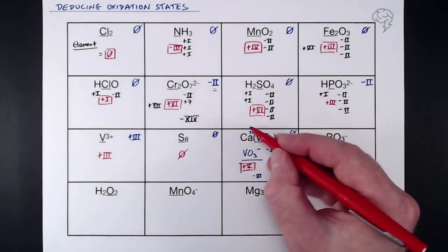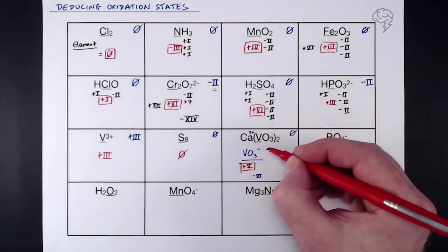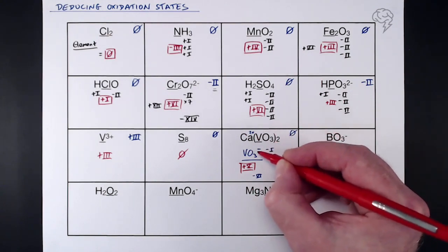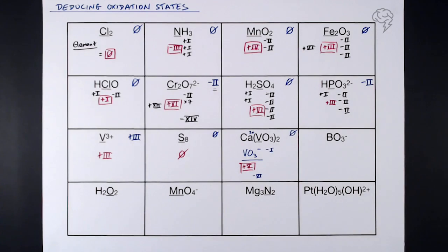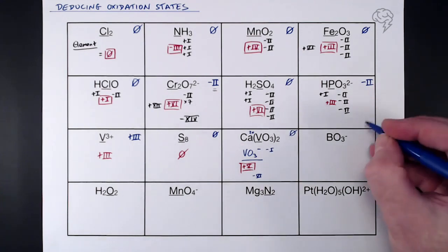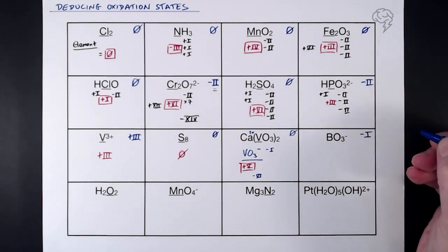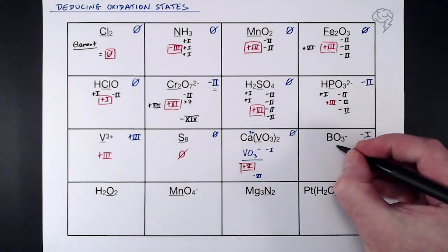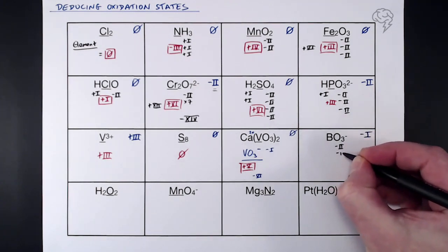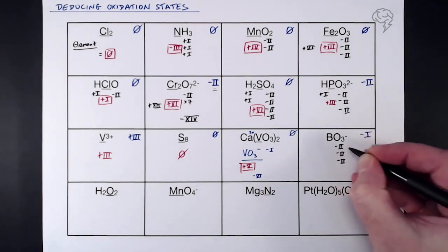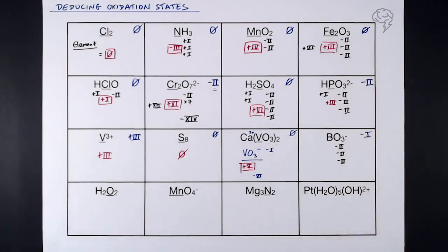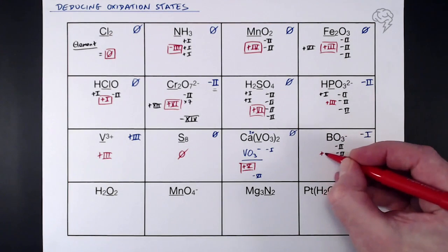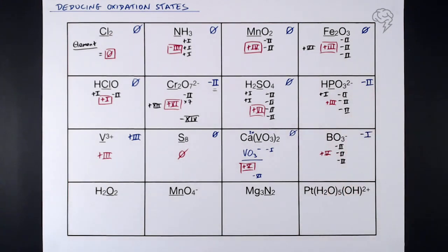With compounds like Ca(VO₃)₂, expand the brackets, get rid of the known element like calcium, work out the overall charge of what's in the brackets, and then solve from there. For BO₃⁻: the overall oxidation state is -1. Three lots of oxygen gives -6. The difference between -6 and -1 is +5, so boron has an oxidation state of +5.